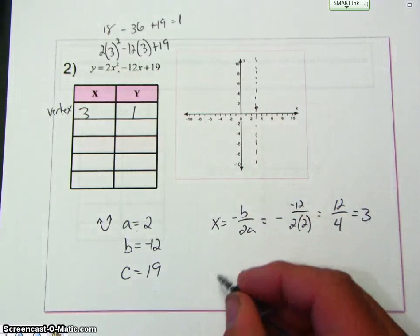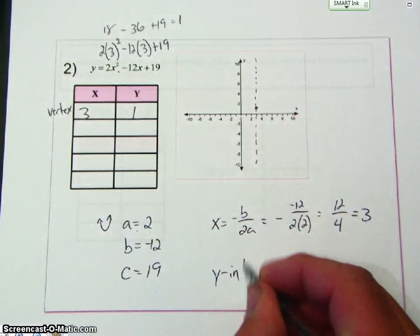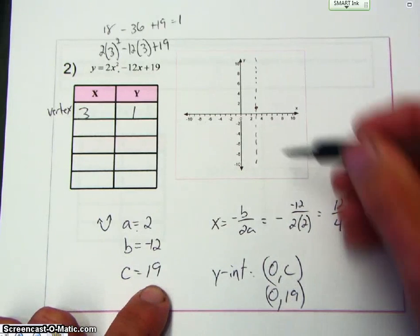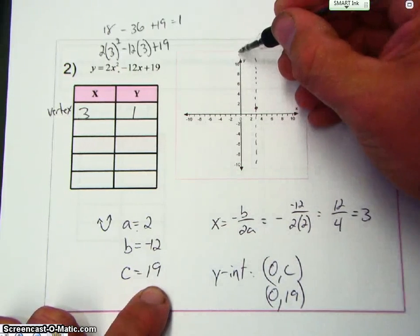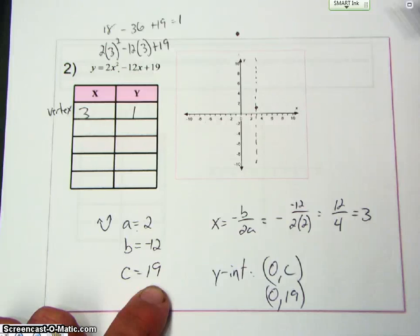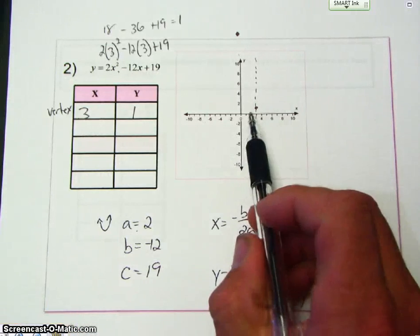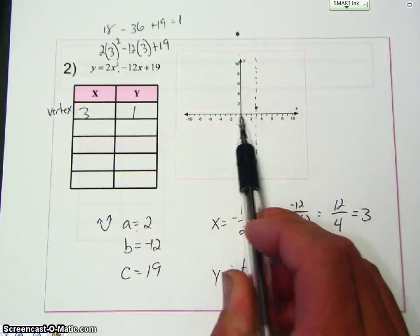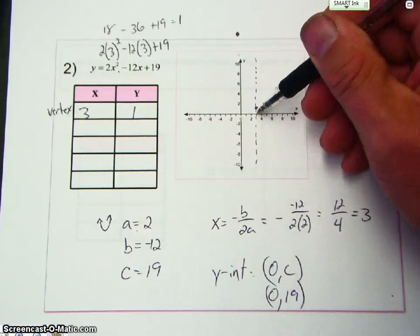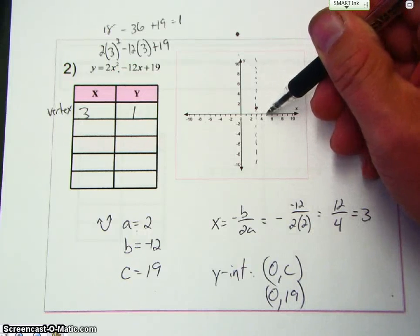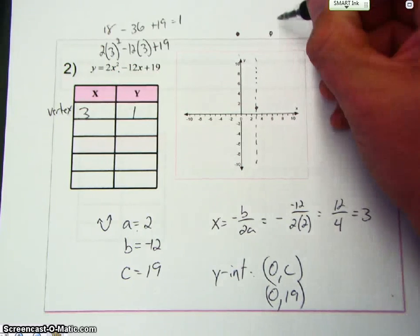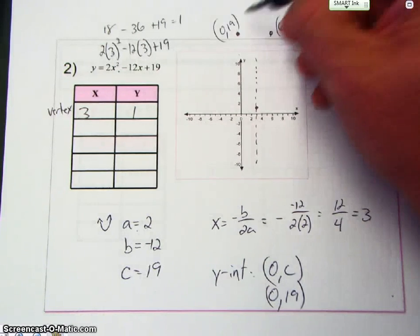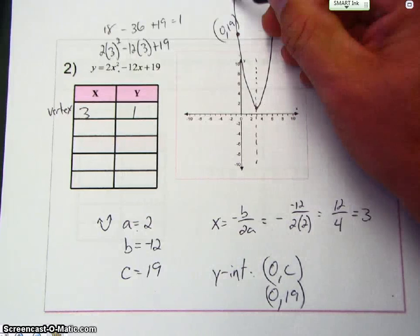The y intercept is 0, c. And c is 19. So my y intercept is at 0, 19. So it's somewhere up here. So the distance from here to the axis of symmetry is a distance of 3. So I'm going to go a distance of 3. 1, 2, 3. So this would be 6 and 19, while this is at 0 and 19. Sketch my curve. And go.